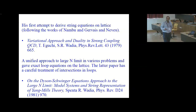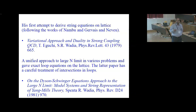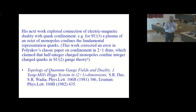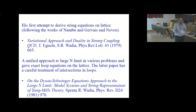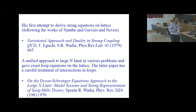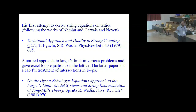Next, Spenta looked at the Dyson-Schwinger approach to large-N in great generality, applicable from spin systems to field theories. In this work he gave a very careful treatment of overlapping and intersecting loops on a lattice, and presented a loop equation — a refinement of the equations presented by Makeenko and Migdal, which were not general enough to be applied to any type of loop intersection. This treatment showed that you could write down a loop equation provided you considered the entire class of intersecting loops, giving a properly regularized version of the loop equation.